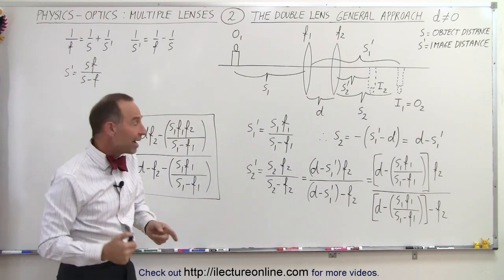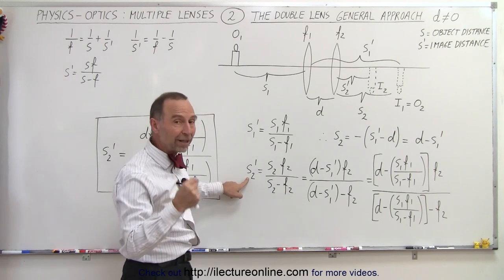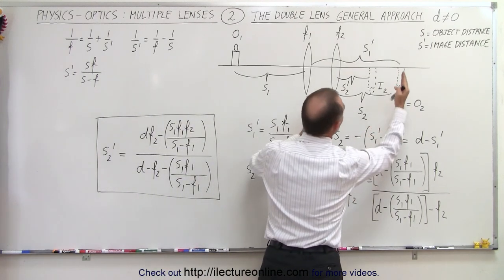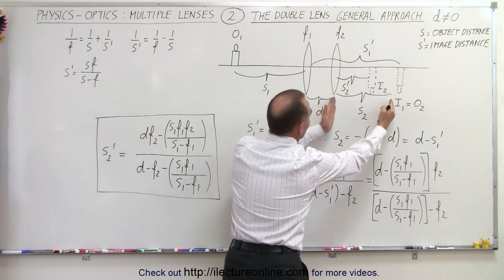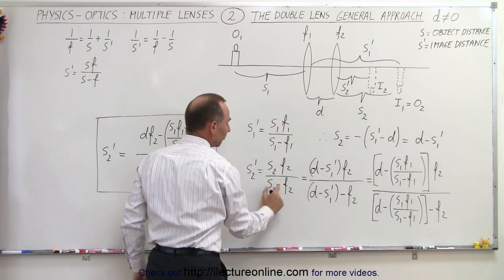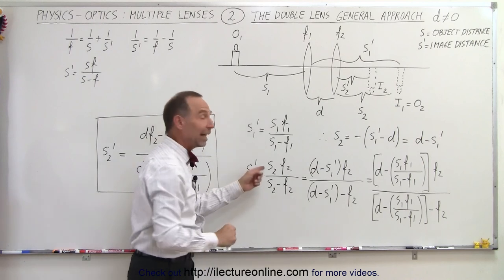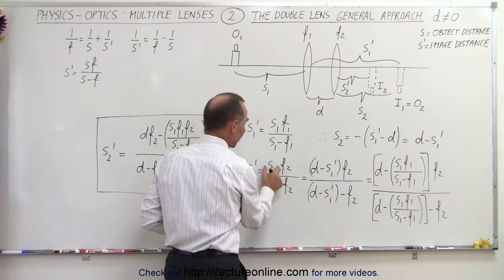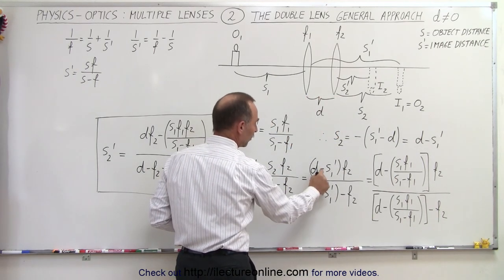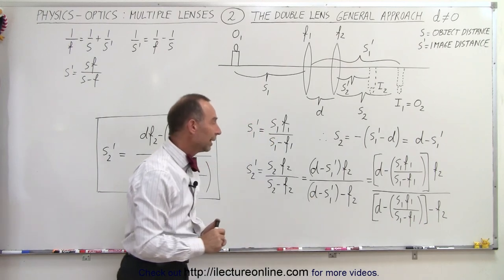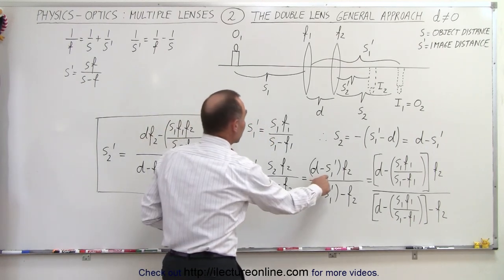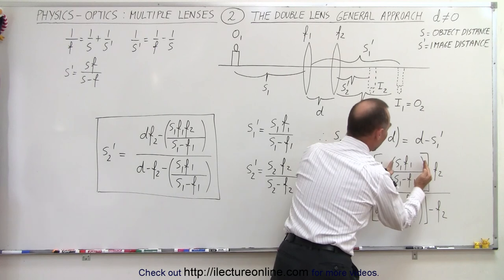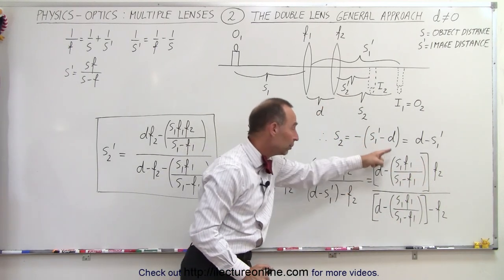The distance to the second image s2' equals s2 times f2 divided by s2 minus f2. Since s2 was defined as d minus s1', we replace s2 by d minus s1' in both the numerator and denominator. We also replace s1' with s1·f1 divided by (s1 minus f1), substituting into both numerator and denominator.